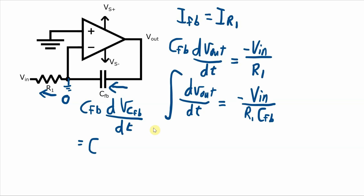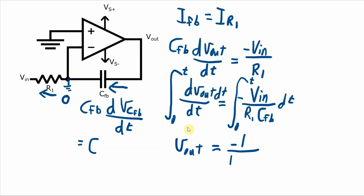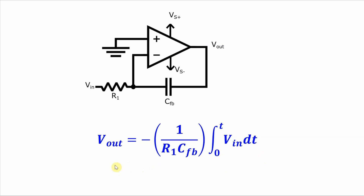Taking the integral over time on both sides of this equation, the left-hand side just becomes V_out, and the right-hand side is the integral over time of V_in with the constant negative one over R1·C_FB pulled out. So V_out is proportional to the integral of V_in over time, where the proportionality is based on the resistor R1 and the feedback capacitor C_FB.